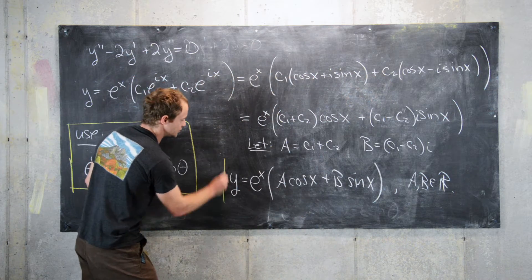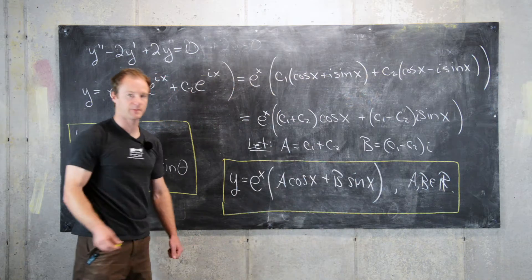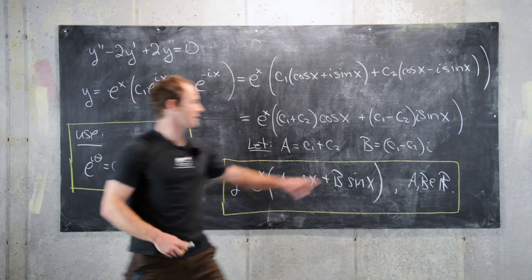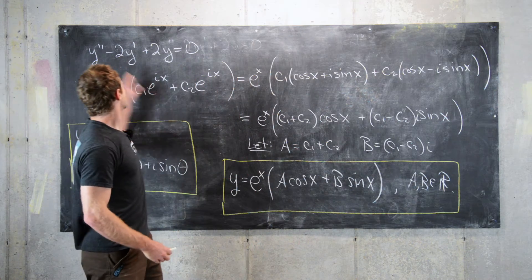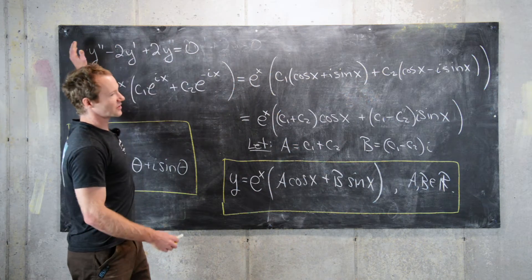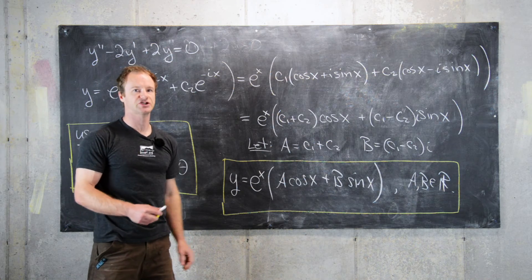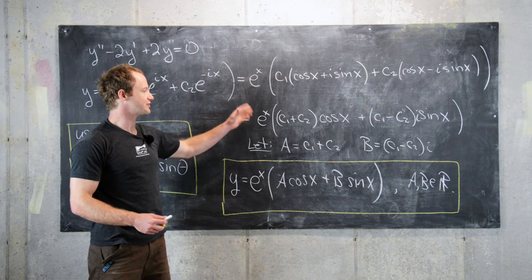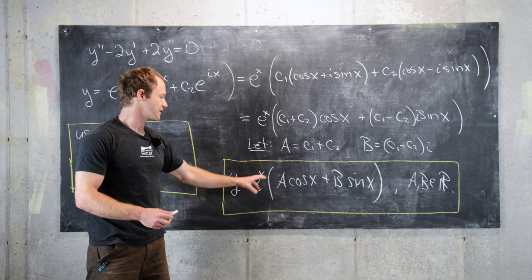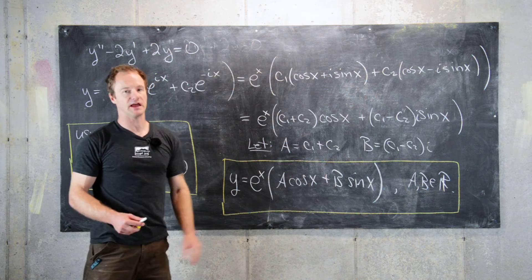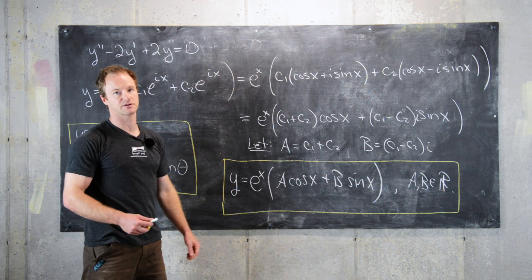So this is the most general solution of this differential equation. And you might be worried here because it looks like B may not be a real number. But in fact, if you're considering this as a function of real variables and you have initial conditions that only have real variables here, once you solve for c1 and c2 or A and B, you'll see that everything will be real in the end, even though we used complex numbers as a tool for this problem. So this is our final solution.